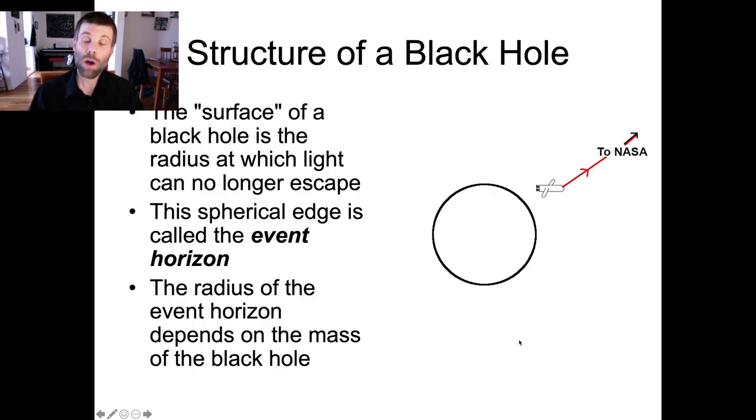This thing that we talk about when we call it a black hole, this region of space, has some important features. The first is its outer boundary, what we call its event horizon. For a common garden variety black hole, the event horizon is described by something that we call the Schwarzschild radius.